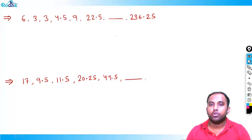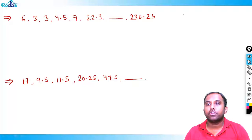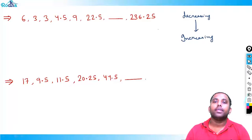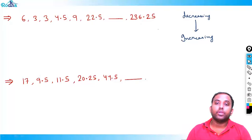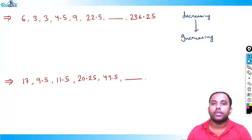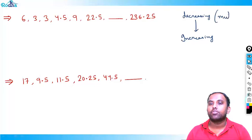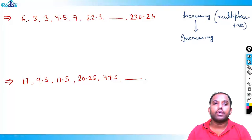Next series: 6, 3, 3, 4.5, 9, 22.5, ?, 236.25. The series first decreases, then increases. It is multiplicative — increasing fast overall. From 6 to 3 is ×0.5. From 3 to 3 is ×1. From 3 to 4.5 is ×1.5. So the multipliers are 0.5, 1, 1.5, 2, 2.5, 3, 3.5 — increasing by 0.5 each step.